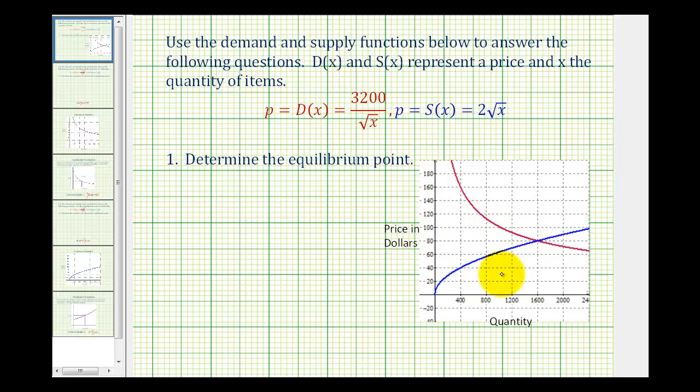So as the price drops, the quantity purchased will increase. And then in blue, we have the supply function graphed and this is normally an increasing function. As the price per unit increases, the quantity supplied to the market will also increase.